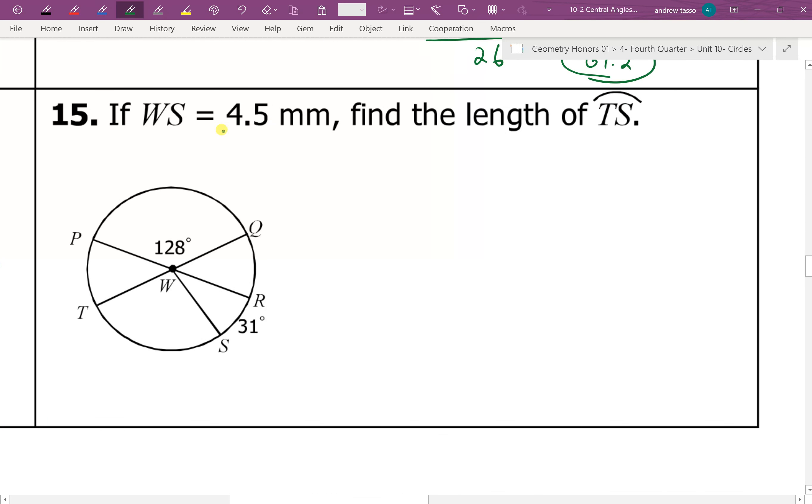All right, last one here. So WS equals 4.5. So WS here is 4.5. Find the length of TS. So we know the radius is 4.5. So first thing, as always, we want to find all the measurements of the arcs. So firstly, let's see what we could do. So I think this one would have to be 31 in here.